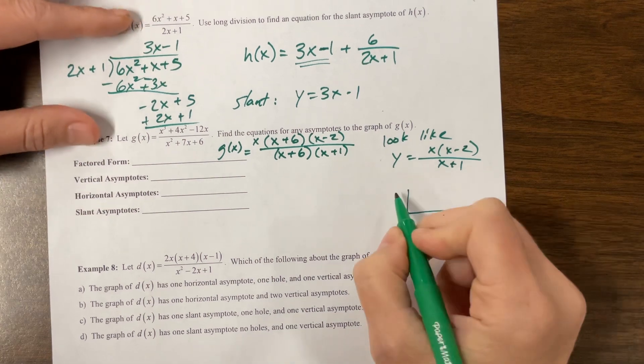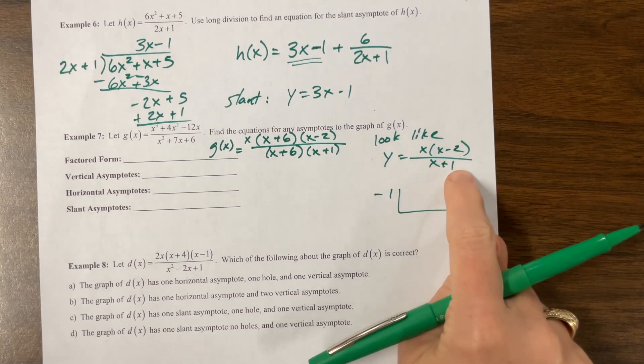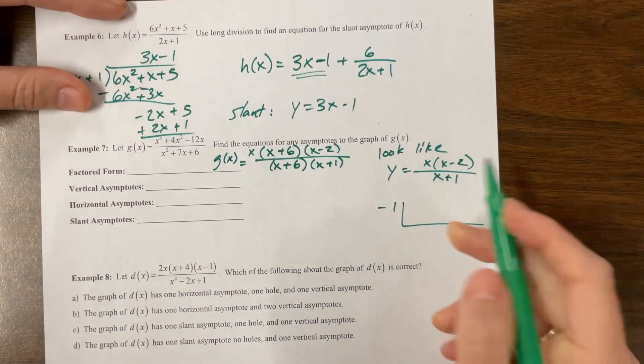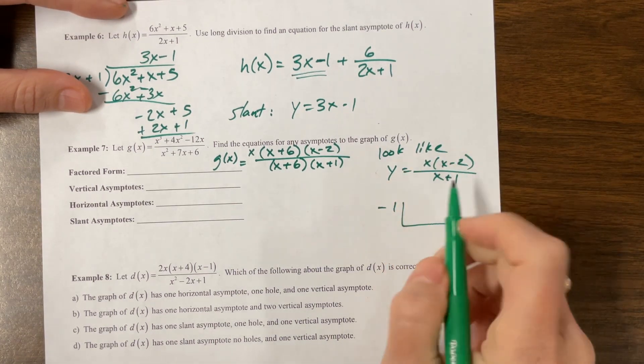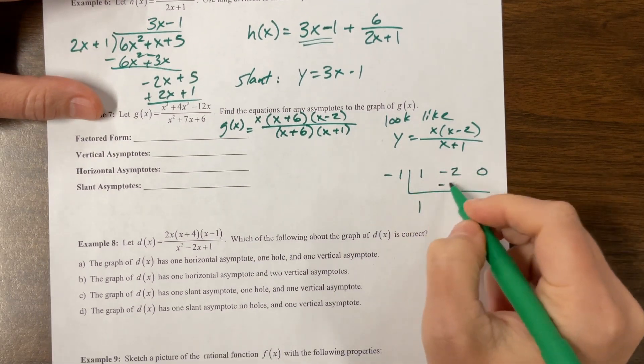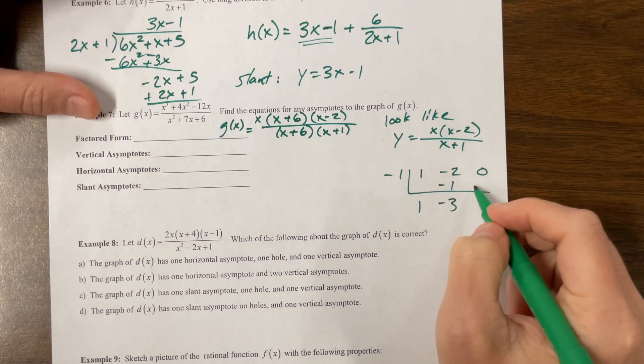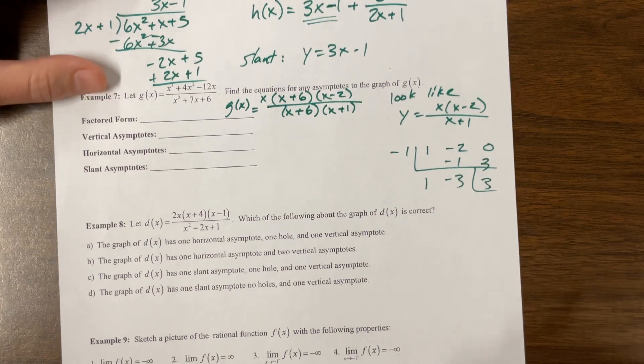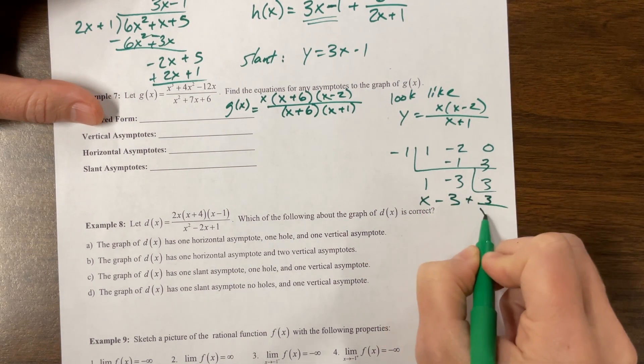So what I'm going to do, I'm going to use synthetic division even though it's not really an AP Precalc thing, but I can divide by this little linear piece quite easily. If I multiplied this through, I would get 1x squared minus 2. And then here's my constant. Okay, so bring this down, multiply, get a negative 1, combine that, that's a negative 3, multiply, and I get positive 3. And so this would be written as x minus 3 plus 3 over x plus 1.